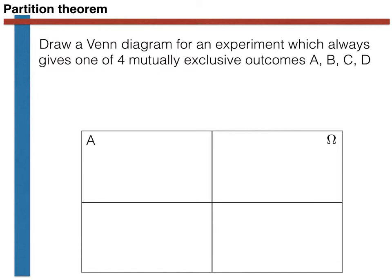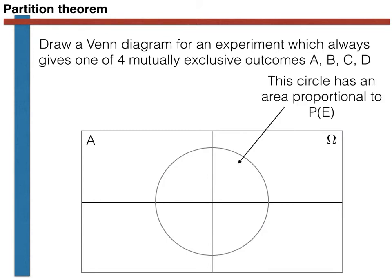Let's now consider one further event, E, and draw the following circle with an area proportional to the probability that E will occur. Draw this on your own Venn diagram and colour in red the part of this Venn diagram that has an area proportional to the probability that both A and E happen simultaneously.